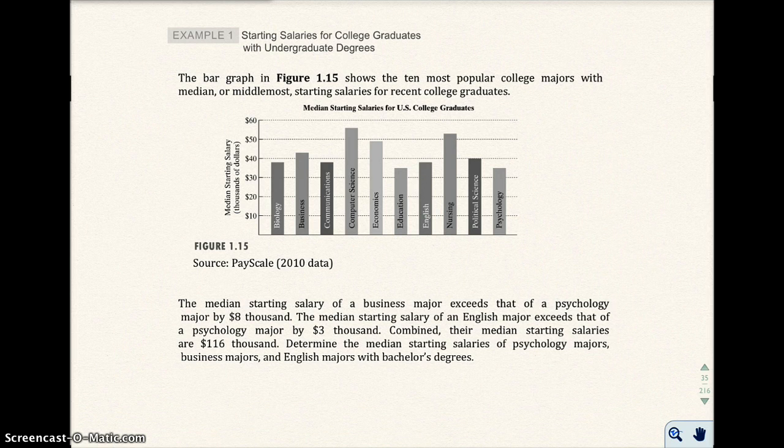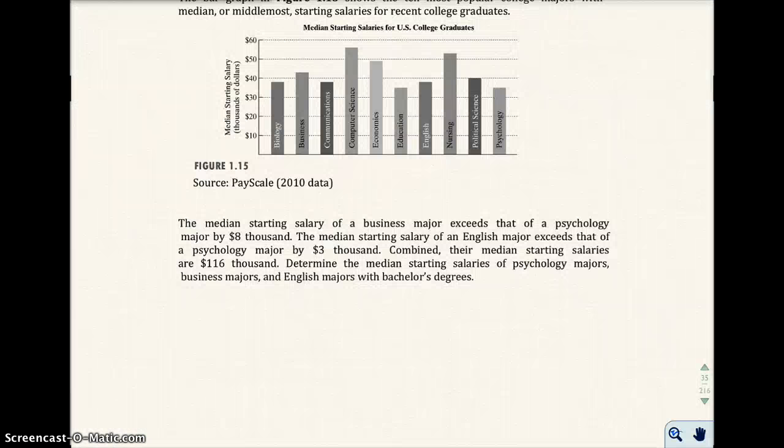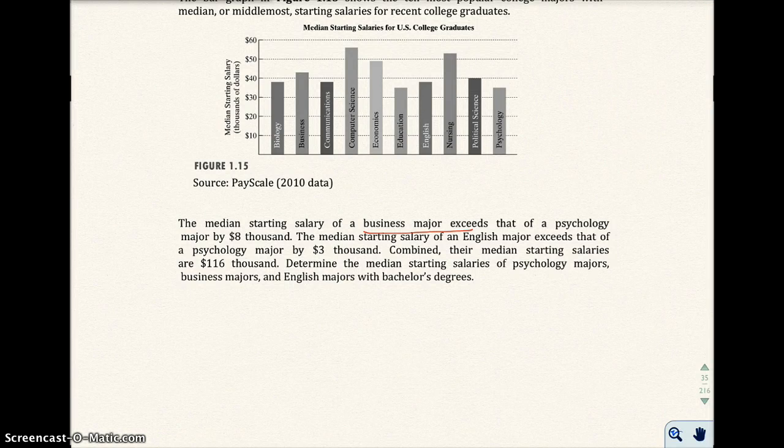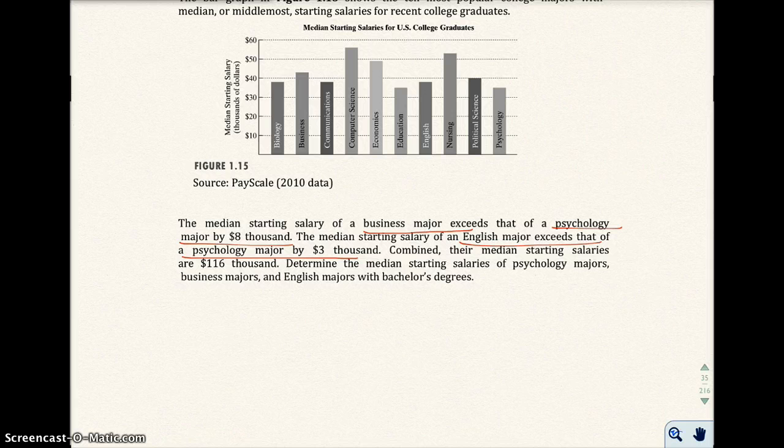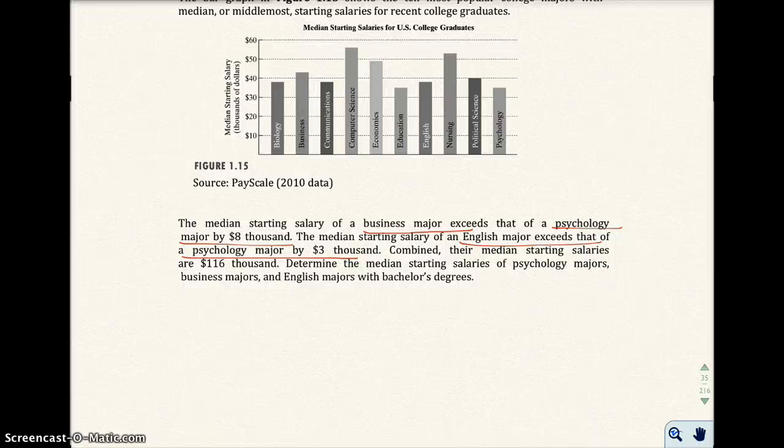Let's look at the word problem. It says the median starting salary of a business major exceeds that of a psychology major by $8,000. The median starting salary of an English major exceeds that of a psychology major by $3,000. Combined the median starting salaries are $116,000. Determine the median starting salary of psychology majors, business majors, and English majors.